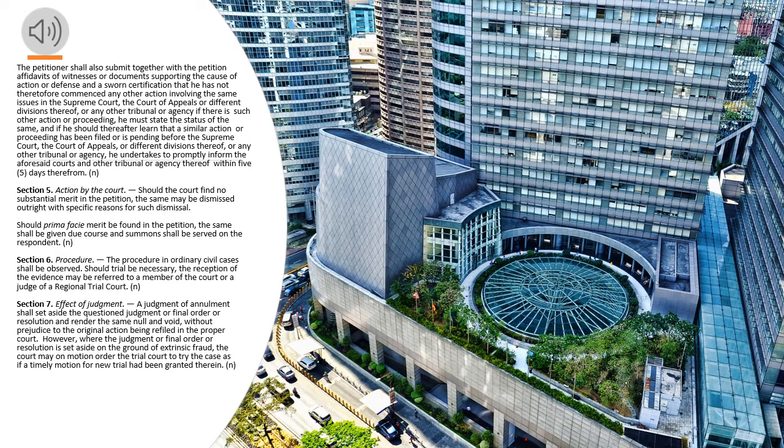Section 7, Effect of Judgment. A judgment of annulment shall set aside the questioned judgment or final order or resolution and render the same null and void, without prejudice to the original action being refiled in the proper court. However, where the judgment or final order or resolution is set aside on the ground of extrinsic fraud, the court may on motion order the trial court to try the case as if a timely motion for new trial had been granted therein.